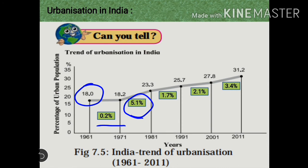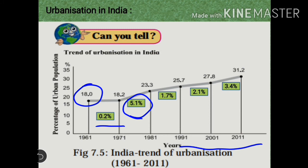The next question is: what was the growth in the percentage of urbanization between 1991 to 2011? Calculating from 1991 to 2011, the growth is 2.1% plus 3.4%, which gives 5.5%. It is clear from the graph that the overall growth of urbanization in India has been slow. The level of urbanization in India in 2011 was 31.2%, which is quite low compared to other developed countries.